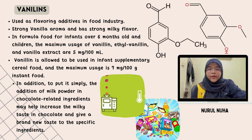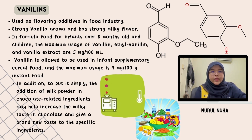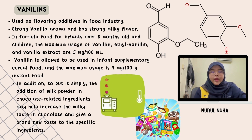In formula food for infants over 6 months old and children, the maximum usage of vanillin, ethyl vanillin, and vanilla extract is 5 mg per 100 ml, which is the value of ready-to-use instant food, and the defined amount according to processing need. Vanillin is also allowed in infant supplementary cereal food with a maximum usage of 7 mg per 100 g. However, there were a few reported cases where the nationally forbidden amount of vanillin was detected in several foreign brand milk powder.